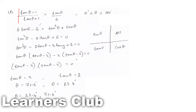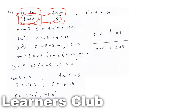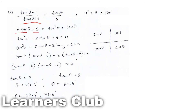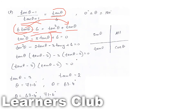I've set the two expressions equal. I multiplied across by 6 and brought terms to one side. Expanding gives 6 tan θ minus 6 on one side and tan² θ plus tan θ on the other. Rearranging into a quadratic equation: tan² θ, then 6 tan θ goes to the other side giving minus 5 tan θ, and minus 6 going over becomes plus 6, equal to 0.